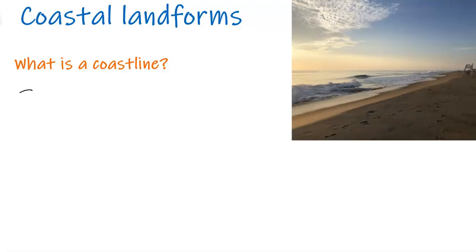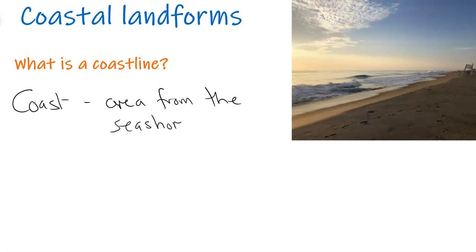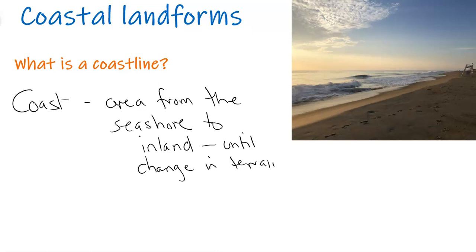So what is a coastline? A coastline is basically defined as the area from the seashore inland, basically until there is a change in terrain or landscape. Some areas of the coast can have a very large, wide coastline that goes inland for many miles — parts of the Atlantic east coast of America, around the Gulf.